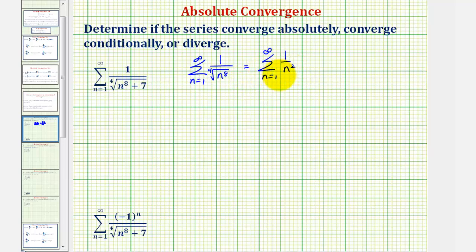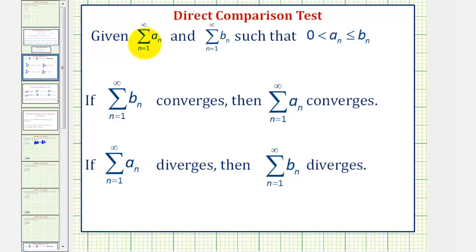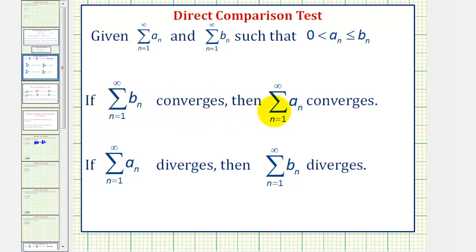To apply the direct comparison test, we have the summation of a sub n and the summation of b sub n, such that a sub n is greater than zero and less than or equal to b sub n. Because we're trying to show convergence, if the summation of b sub n converges, then the summation of a sub n converges as long as we show that a sub n is less than or equal to b sub n.